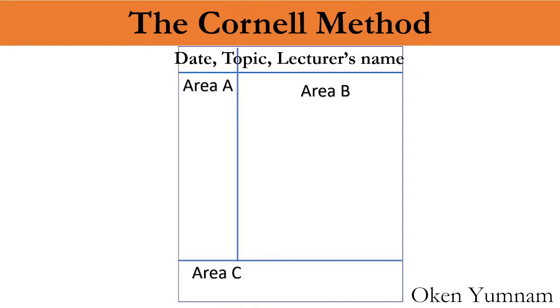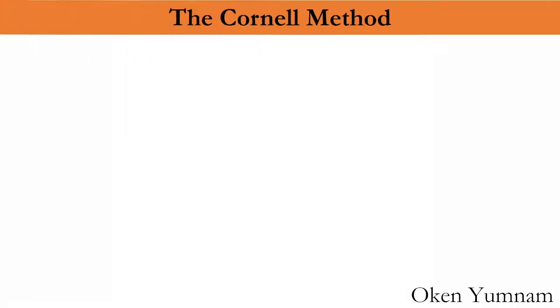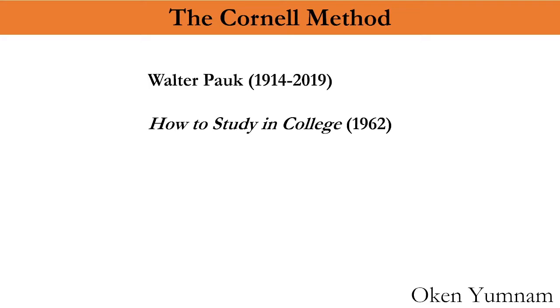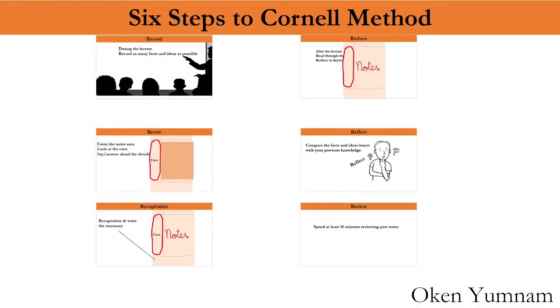This small area is what we call Area A. Let's call the big one Area B, and the bottom one Area C. At the top, we write the date, the topic, and the lecturer's name. In Area A, we write the keywords. Area B is where we write the description of the notes during the class or lecture. Area C is where we write the summary. This Cornell method was developed by Walter Pauk in his book 'How to Study in College' written in 1962 while he was working at Cornell University.